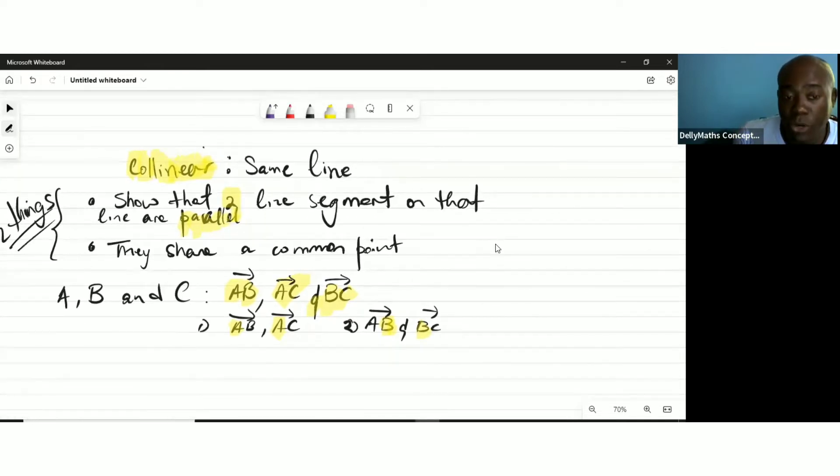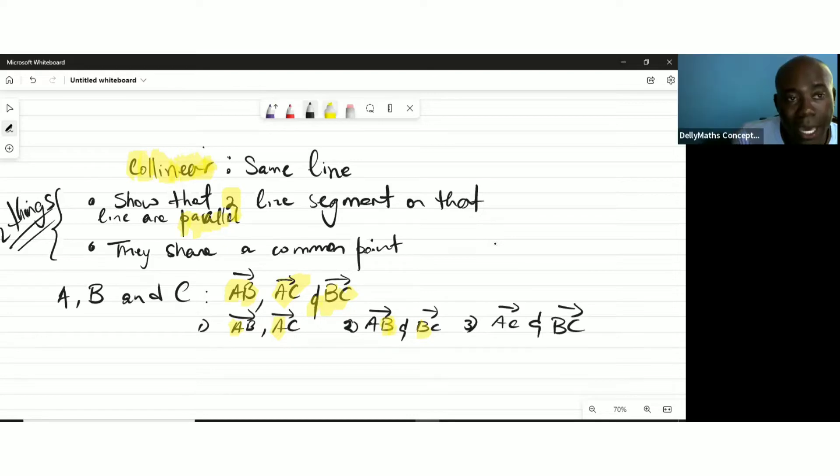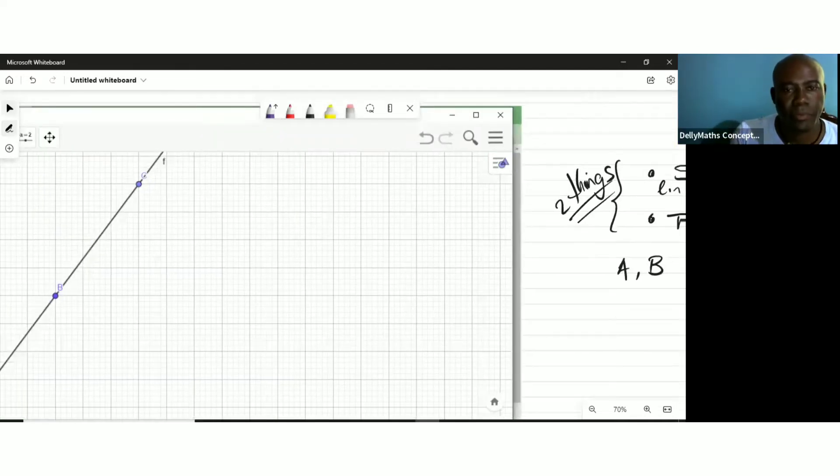Another student could pick AC and BC. You only need to do one of these, I'm just showing you that you can do it three ways. When you pick AC and BC, C is the common point.